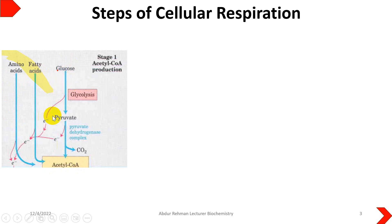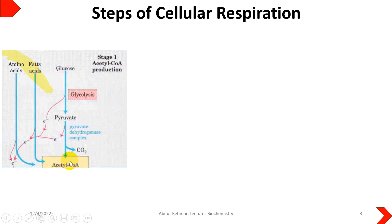We studied glucose metabolism in our previous lecture on carbohydrate metabolism in detail. It comes through the glycolysis process and is converted into pyruvate. In today's topic, we will discuss in detail how this pyruvate is converted into acetyl-CoA with the help of the pyruvate dehydrogenase complex.